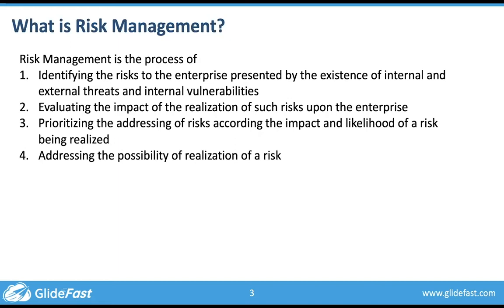If a risk is very high impact but not very likely, we may want to put off addressing it until a little later. The fourth step is actually addressing the risk — do we just accept that it could happen and deal with it when it does, or do we look at controls in place or buy insurance? All of us deal with risk on a daily basis. We get into our cars and go out on the roads, dealing with machinery and individuals — that means we're vulnerable. We address those vulnerabilities by using turn signals and buckling our seatbelts.